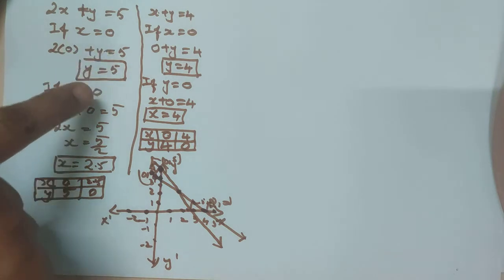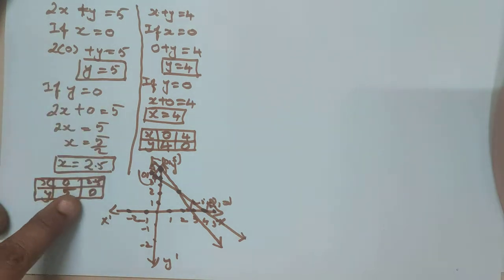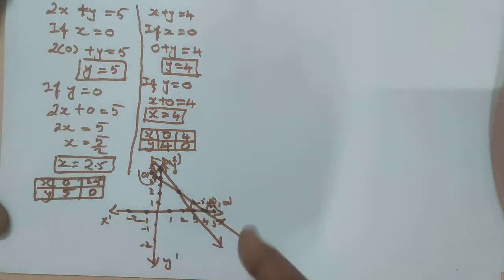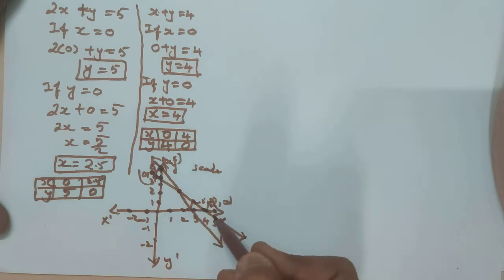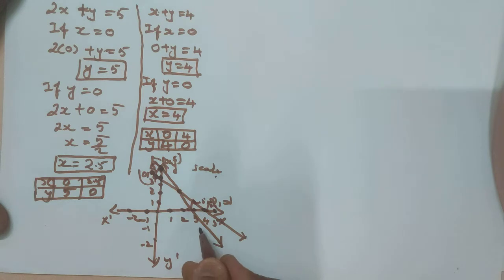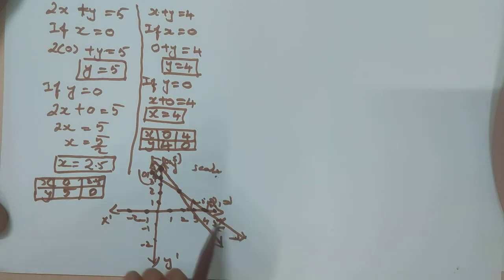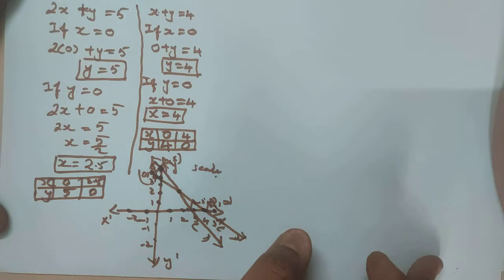This is the graphical method — easy method. You should consider x as 0, find the y answer, then consider y as 0 and find the x value. Plot these points in the graph. Don't forget to write the scale. x-axis: 1 cm is equal to 1 unit. y-axis: 1 cm is equal to 1 unit. Draw the line and you can write the equation label on each line.